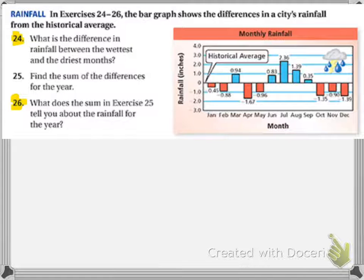Okay, so for these questions 24 through 26, we're going to use this graph on the side. The bar graph shows the differences in a city's rainfall from the historical average. What is the difference in rainfall between the wettest and the driest months?